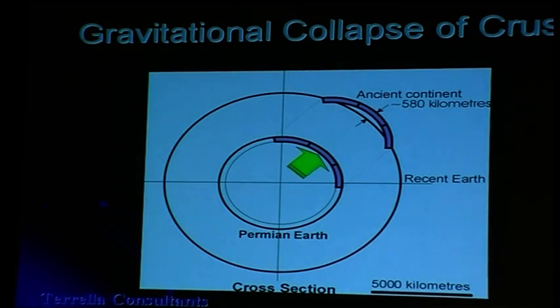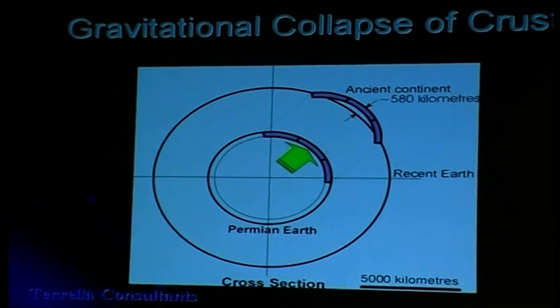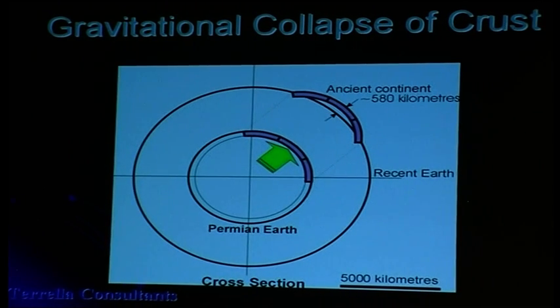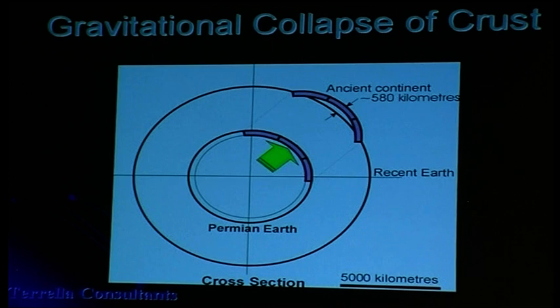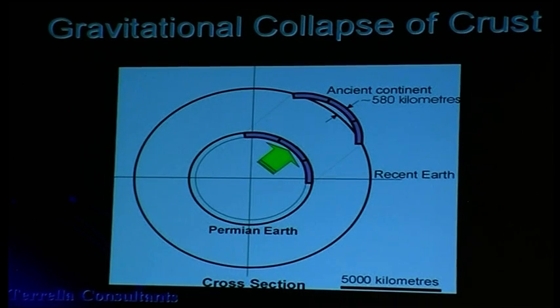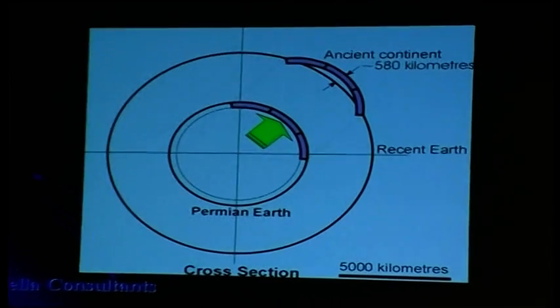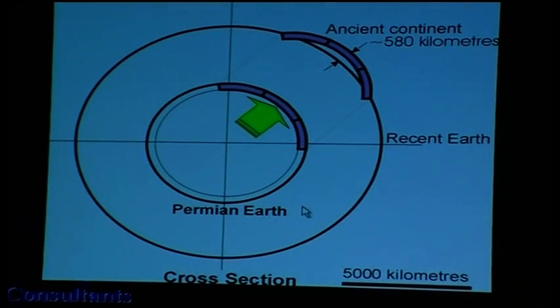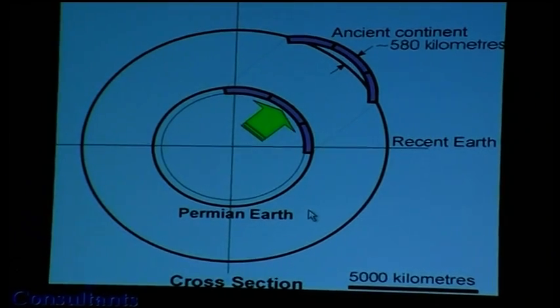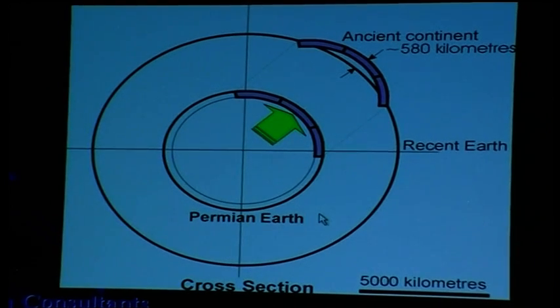This next slide is an introduction to the next phase of this presentation. What happens to the continental crust and in part the oceanic crust when we increase earth radius? And this is alluding to a mechanism for mountain building and seismic activity and volcanic activity.